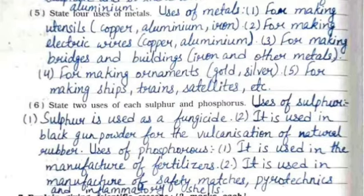Fifth: state four uses of metals. First: for making utensils — copper, aluminum, and iron. Second: for making electric wires — copper and aluminum. Third: for making bridges and buildings — iron and other metals. Fourth: for making ornaments — gold and silver. Fifth: for making ships, cranes, satellites, etc.